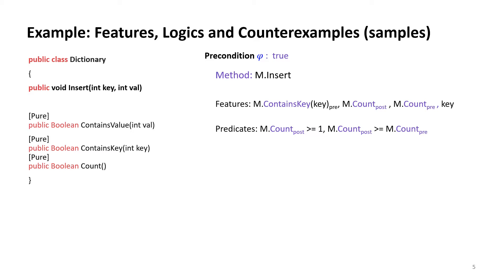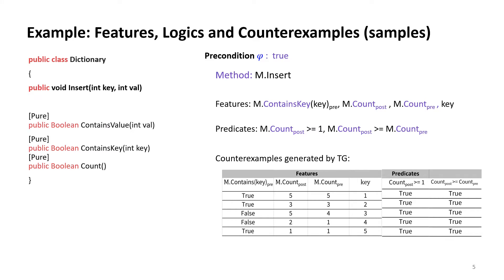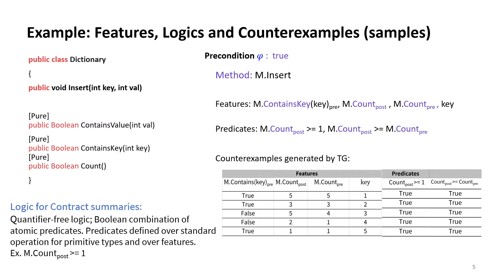Base predicates are defined over integer features and standard operations for primitive types, such as greater than, and can also include Boolean features. Counterexamples are vector values of the previously mentioned features, along with valuations of predicates. The table shows other examples returned by the test generator. The logic for contract summaries is quantifier-free Boolean combinations of atomic predicates, where summaries relate input and output parameters, including the effect on the receiver object state and other objects in the parameters of M.